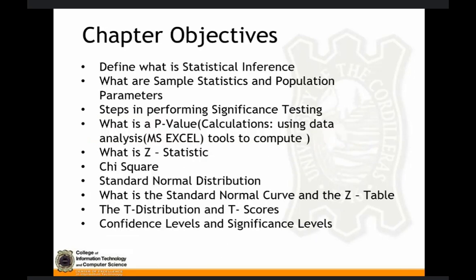In this chapter, we should be able to define what is statistical inference, what are the samples of statistics and sample population proportions, steps in performing significance testing, what is a p-value, including calculations using MS Excel and manual calculation, and of course, what is your z-statistic, the g-square, your standard normal distribution, the normal curve and z-table, and the t-distribution and t-scores, and your confidence levels and significance levels.